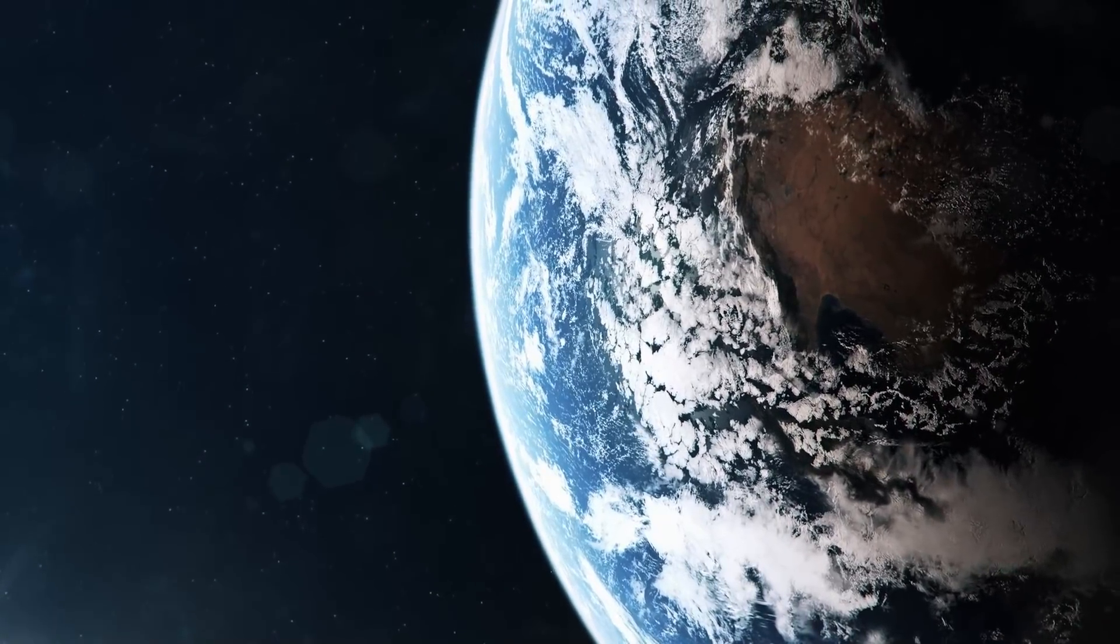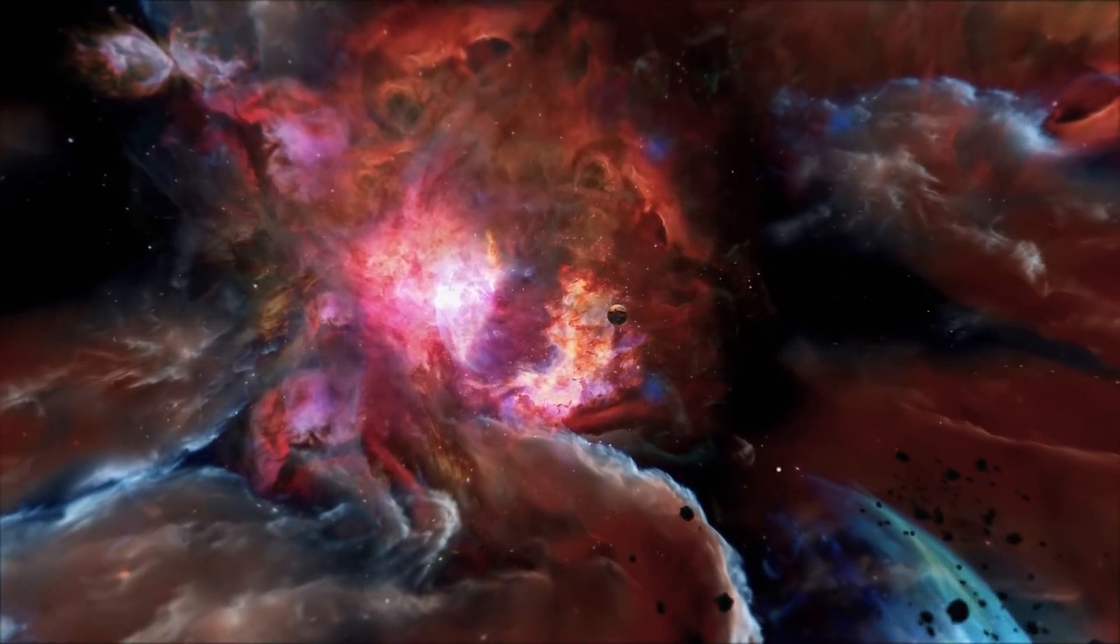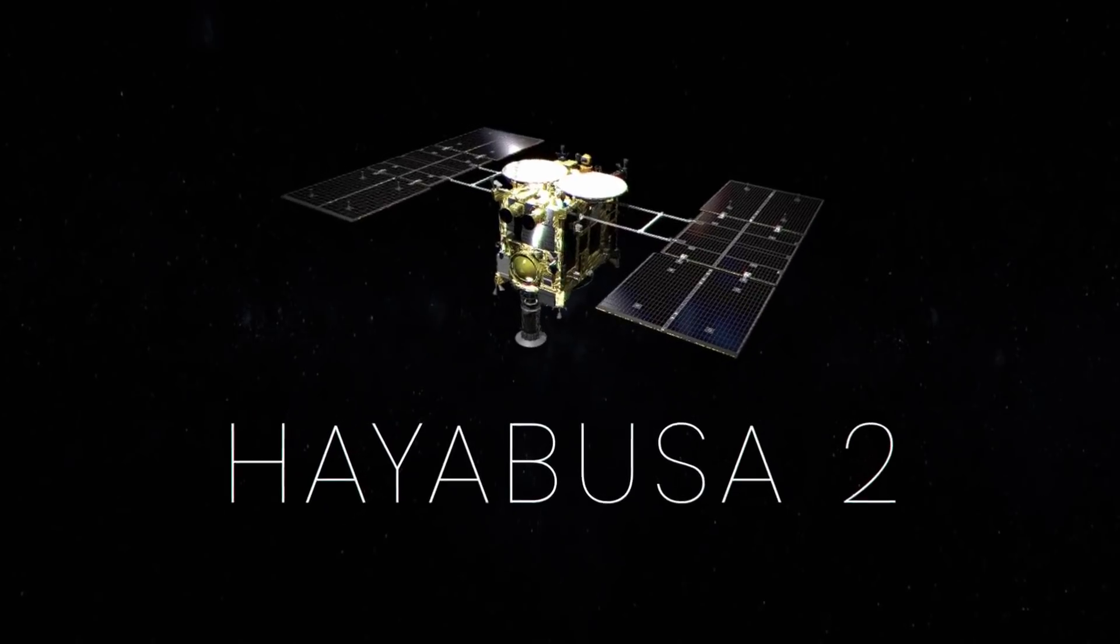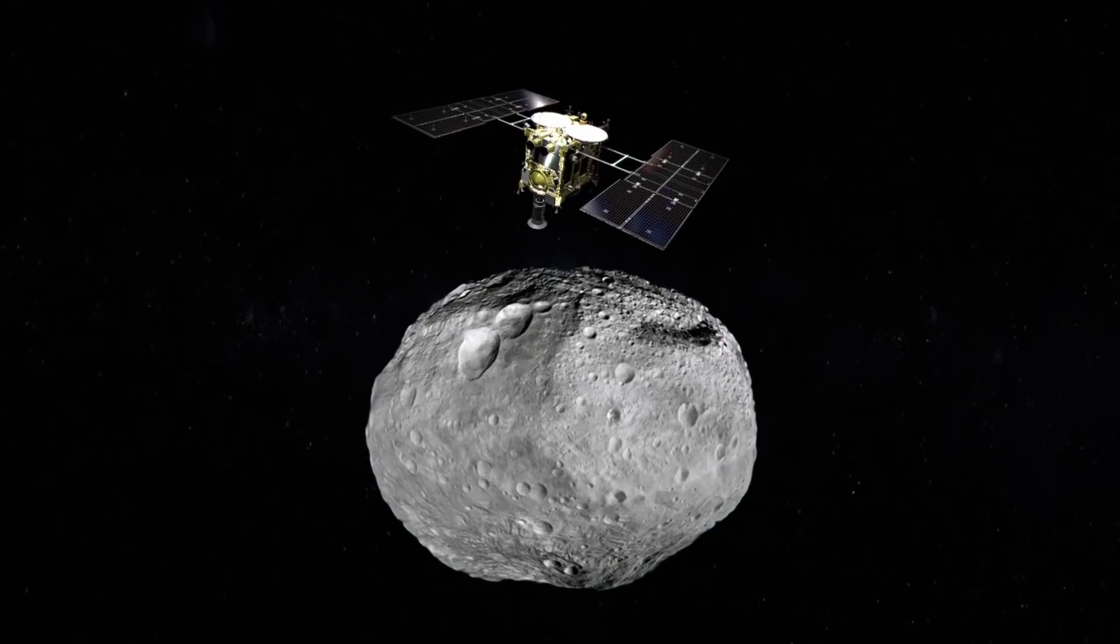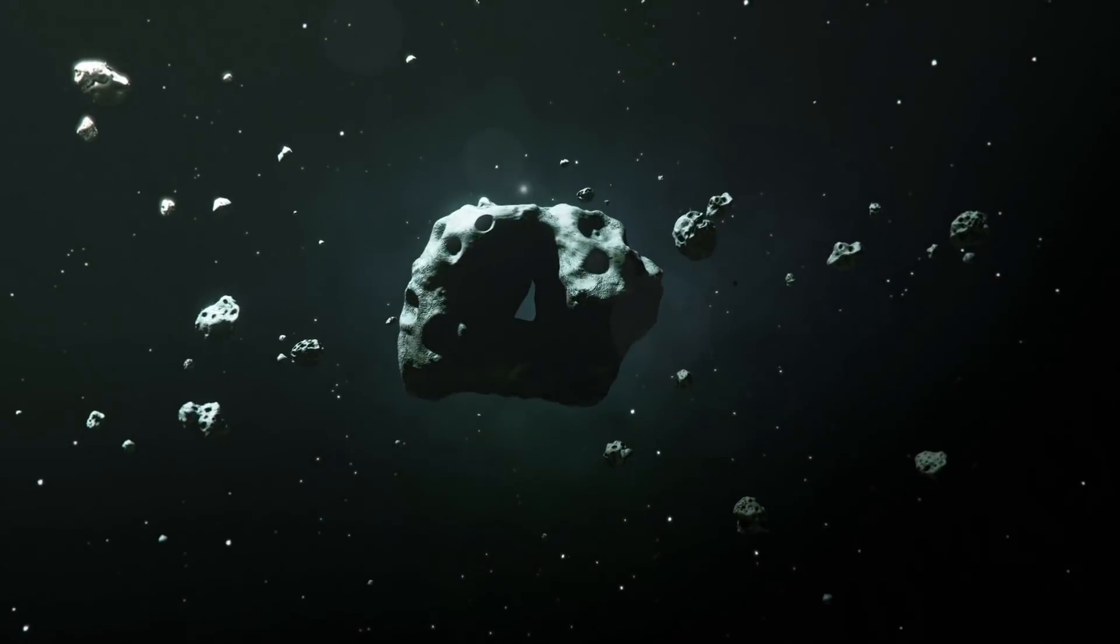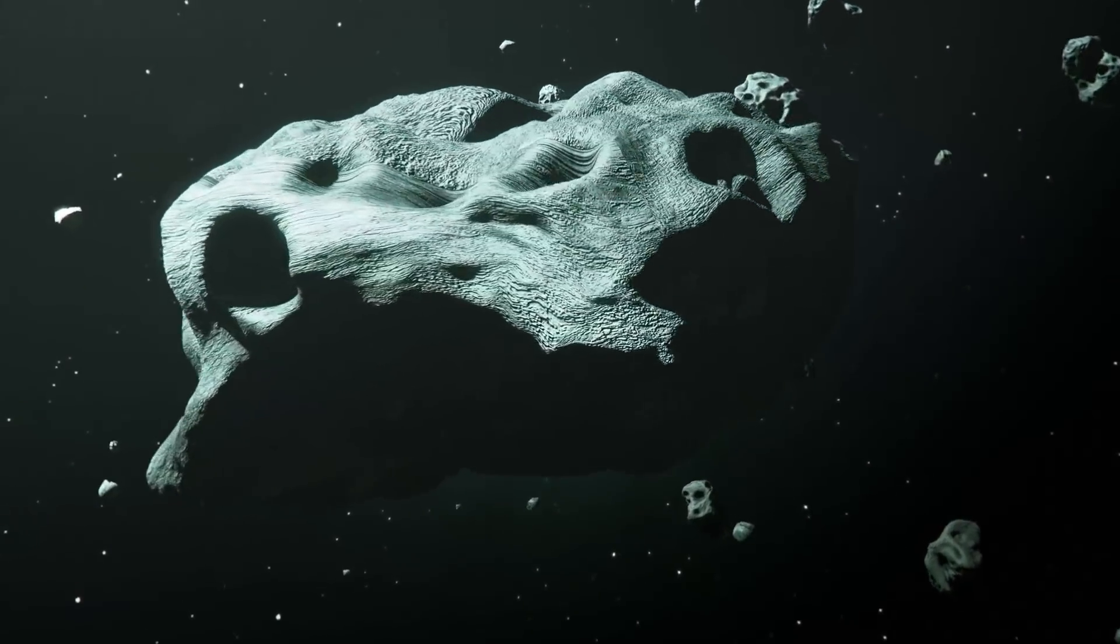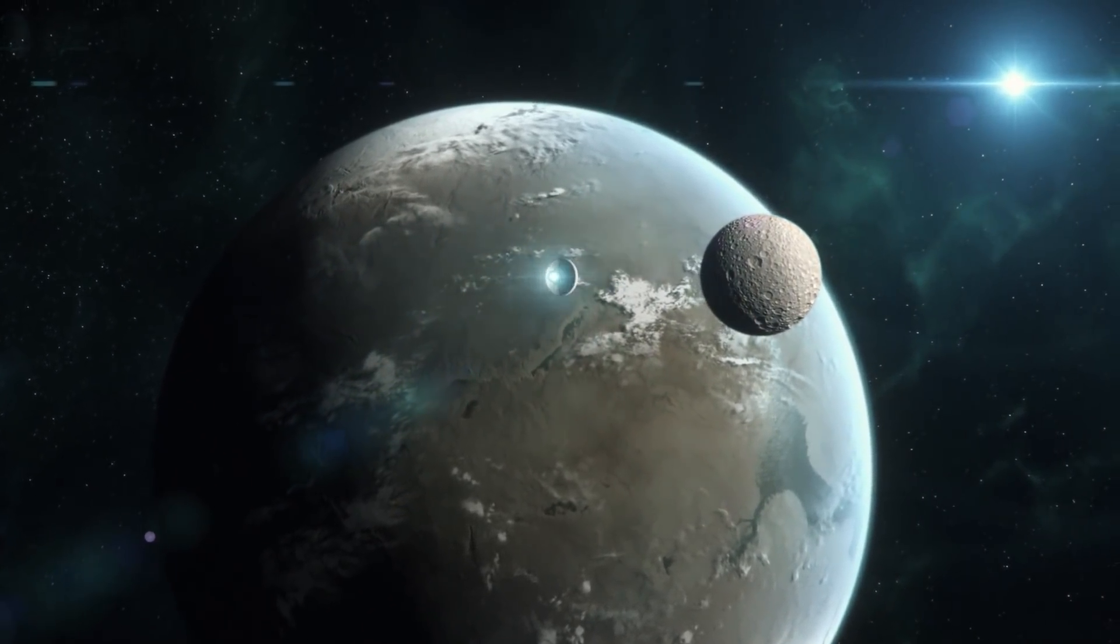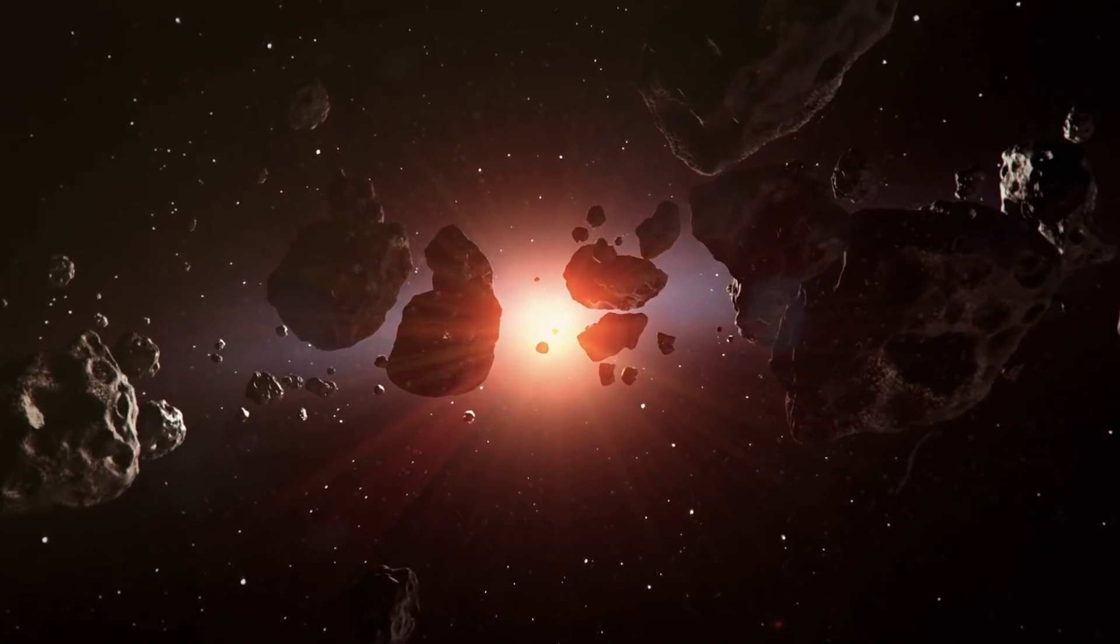Observations from space and the ground have found water to be one of the most abundant molecules in the universe. In fact, the Japanese spacecraft Hayabusa 2 recently brought back samples from an asteroid that has signatures of water and organic material. The most amazing thing found was the asteroid didn't pick it up from somewhere, but is the source. This means there could be many super-Earths with water just waiting to be discovered.